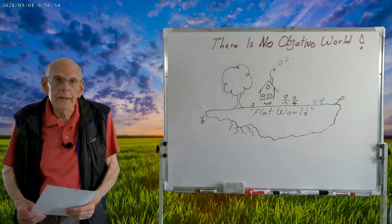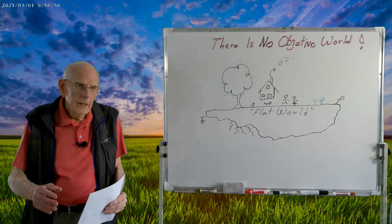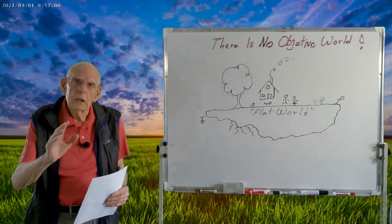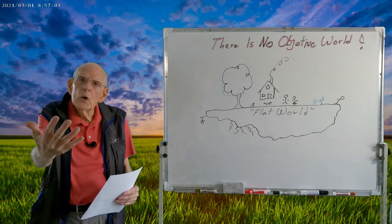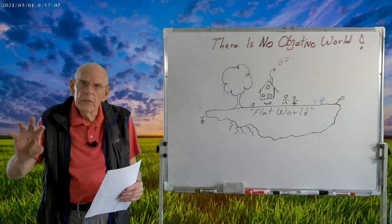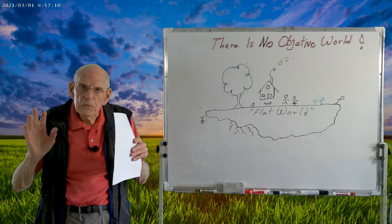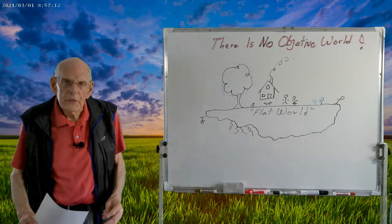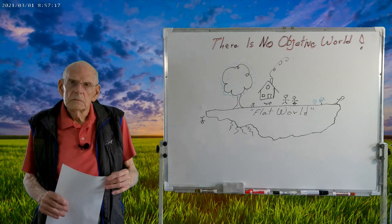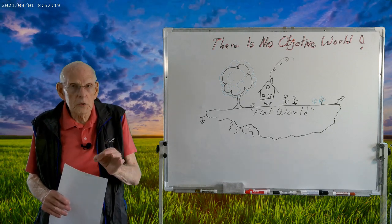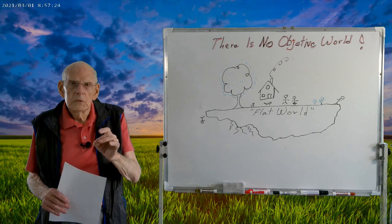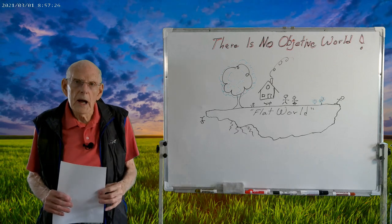There is no objective world. Now, we think there's an objective world, because in the illusion, we look out and we believe we are seeing objects. And that our outside world is filled with objects.